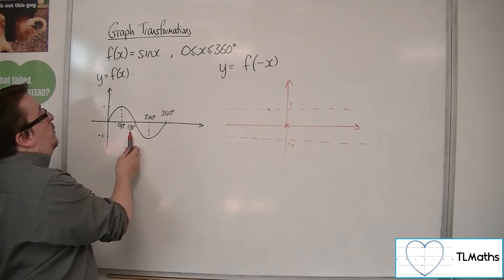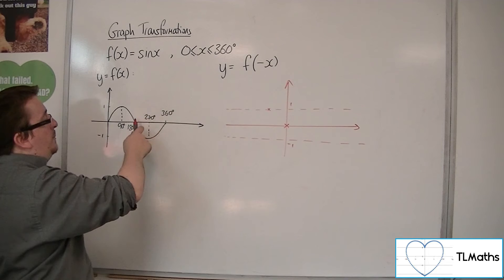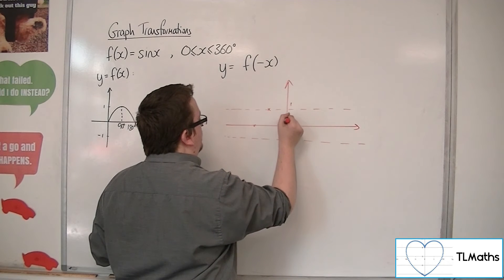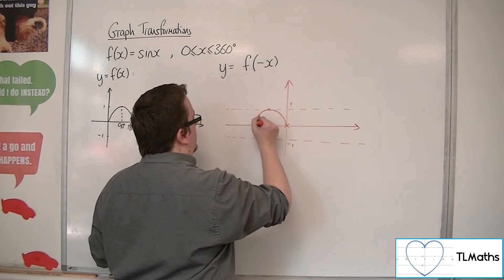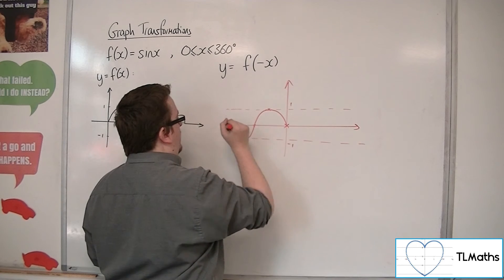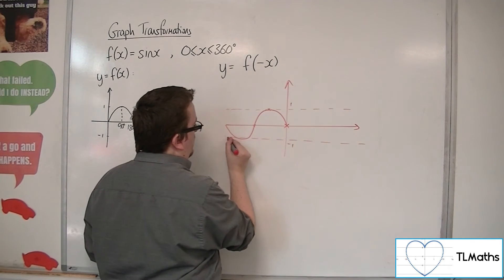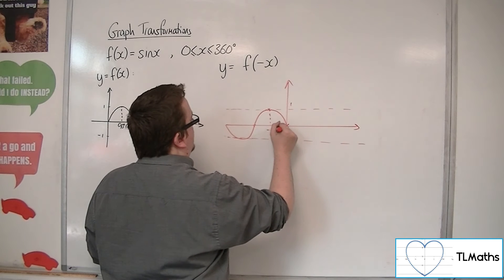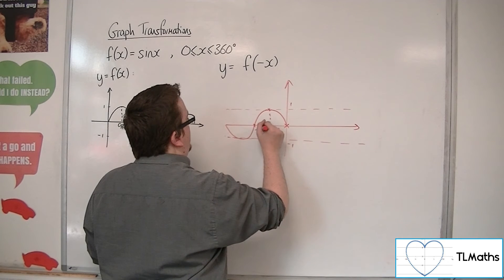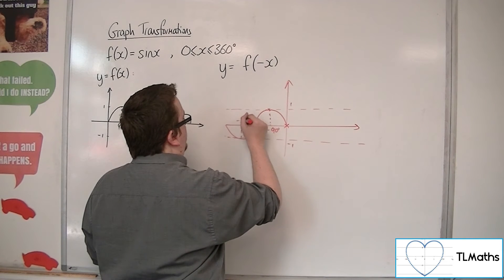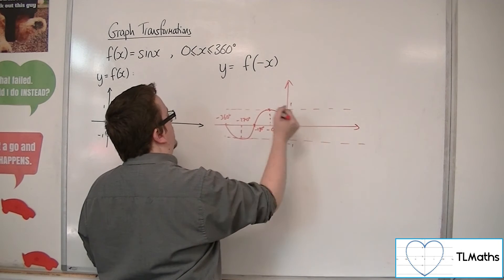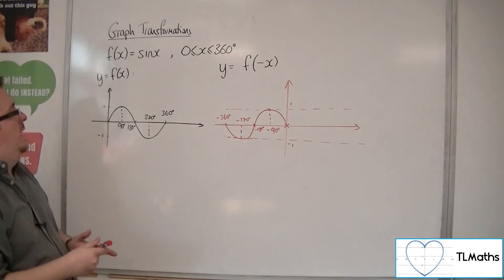And minus 180 must be at 0. And so the curve must look something like this. Well, that was a bit poor there. OK, so there's minus 90, there's minus 180, there's minus 270, and there's minus 360. Still going between minus 1 and 1.